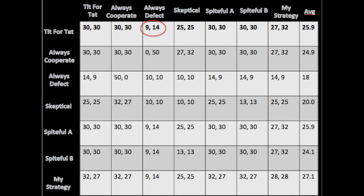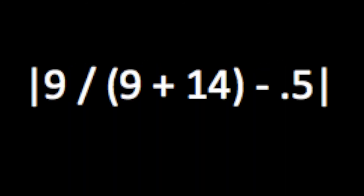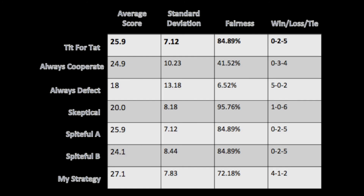Fairness was calculated by looking at each round one at a time. I would take the fraction of the points in that round won by the strategy and subtract it from 0.5, because 0.5 corresponds to the players sharing the points evenly. I then summed these up for each of the rounds and subtracted from 1 so that higher percentages would correspond to better strategies. The last thing I looked at was the win, loss, and tie record, which is important depending on what you're trying to accomplish. If winning is most important, you might be better off always defecting. If not losing is important, you might be better off being a little skeptical. And if tying is good enough, you have a number of options.